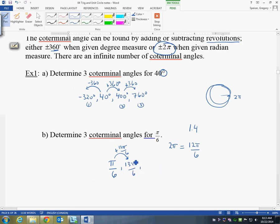And if I do that again, if I add another 12π/6, then I would have 25π/6. Same idea, if I subtract 12π/6, then 1π/6 minus 12π/6 will give me minus 11π/6. So again, I have my three answers here.